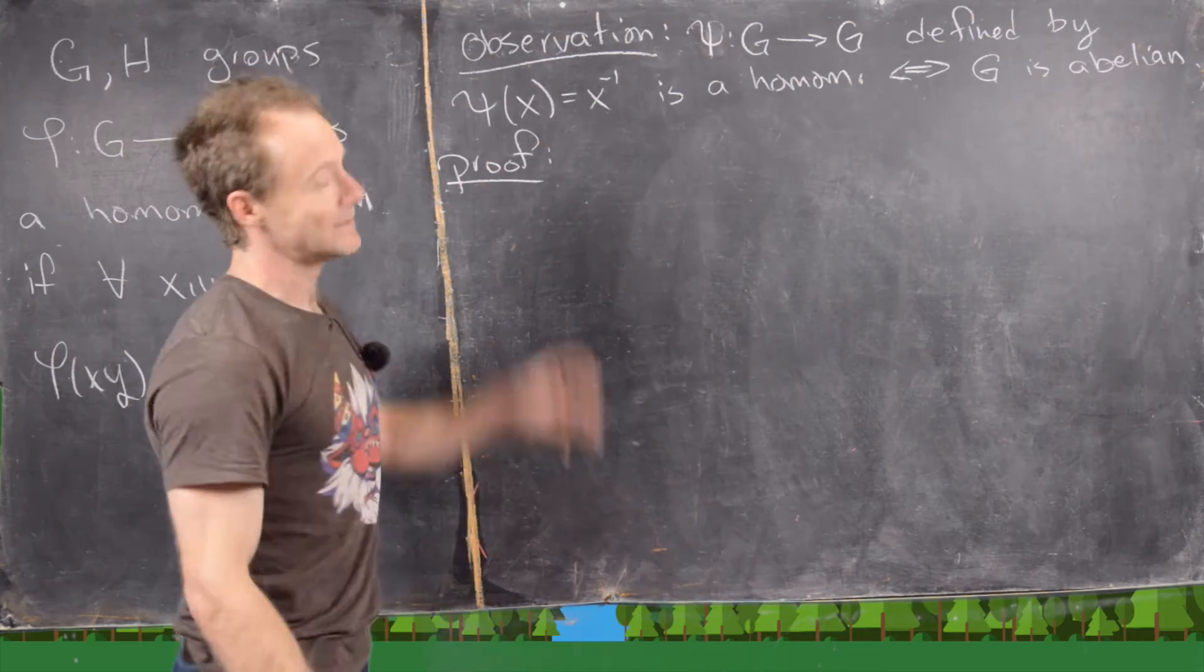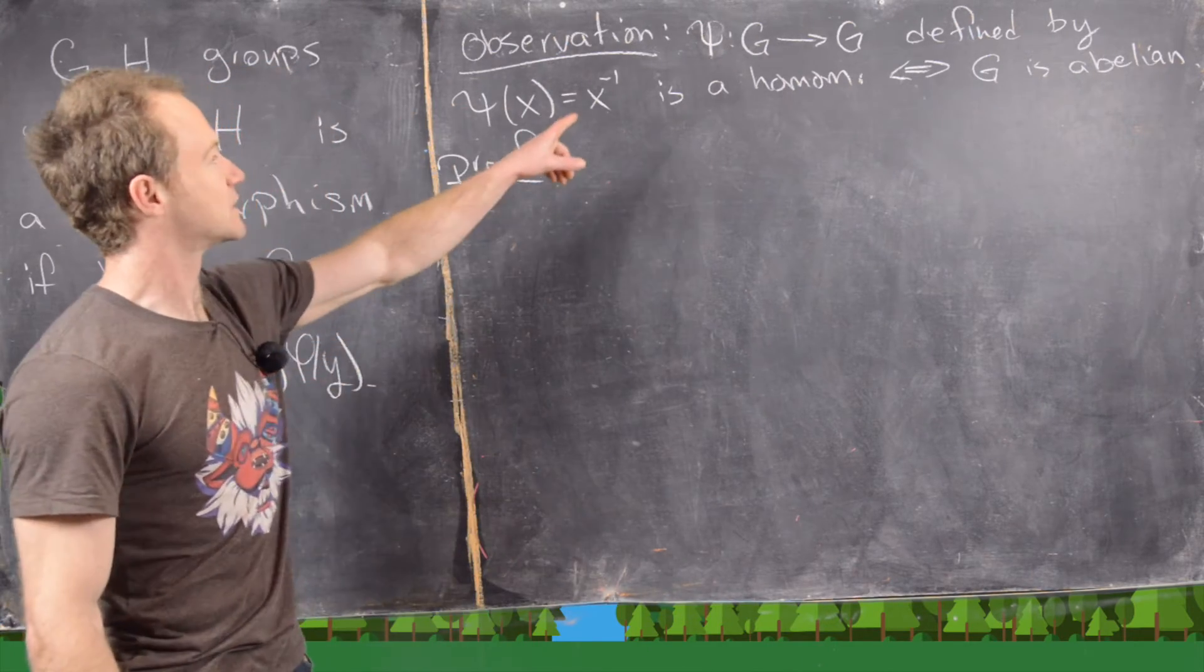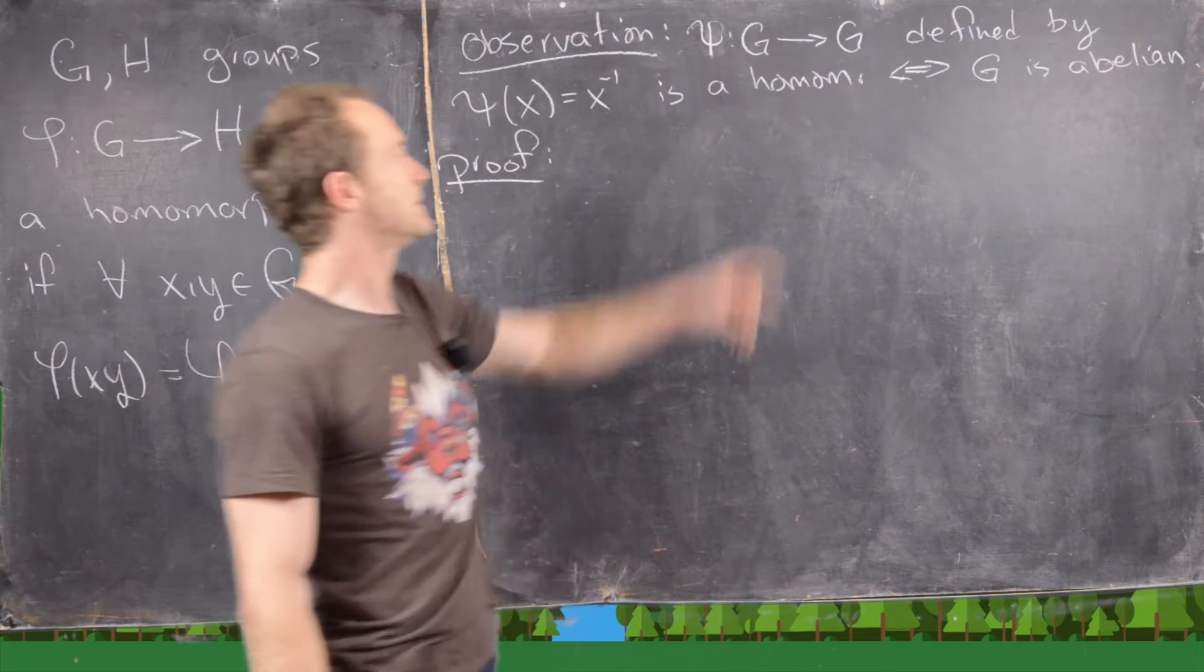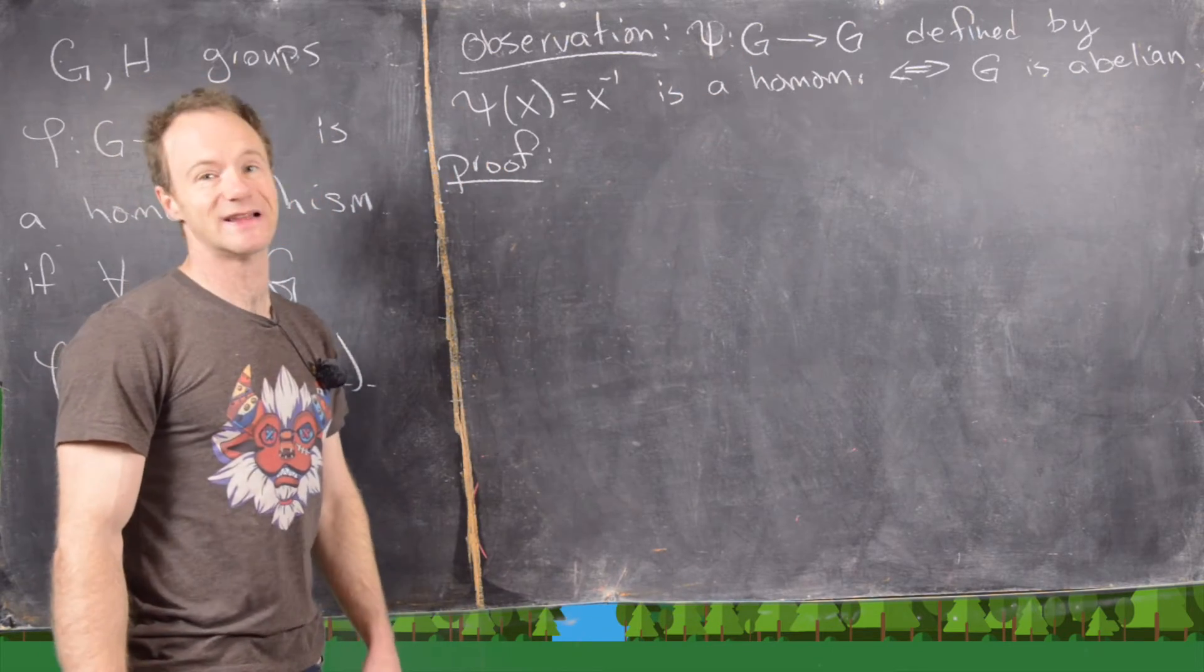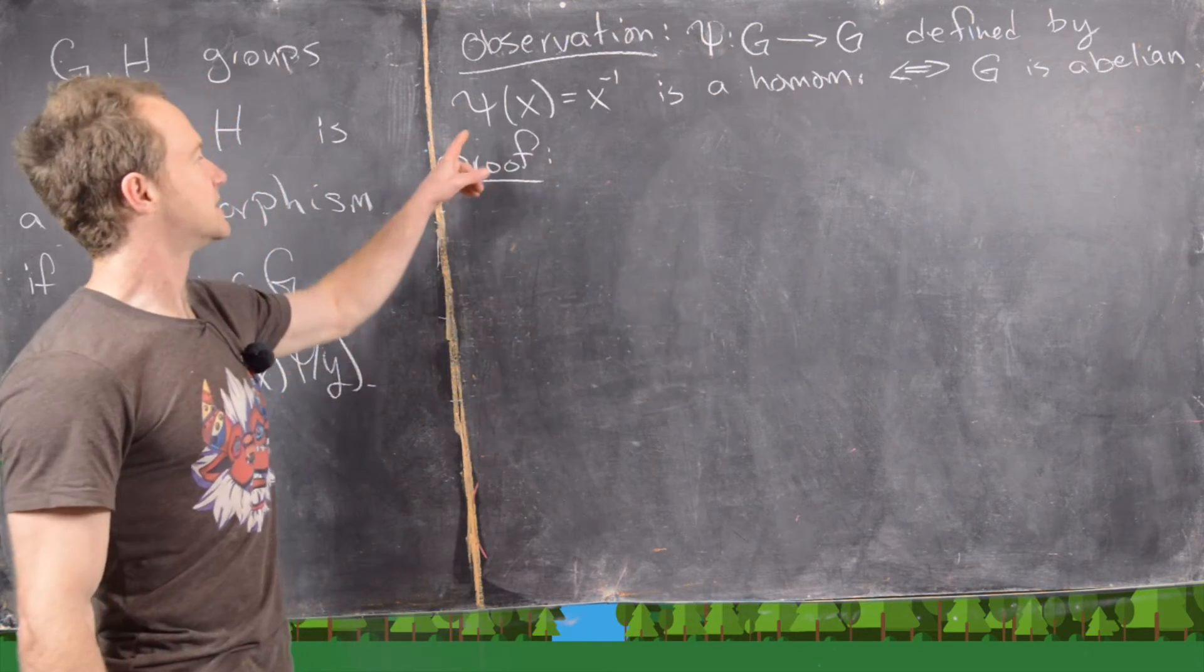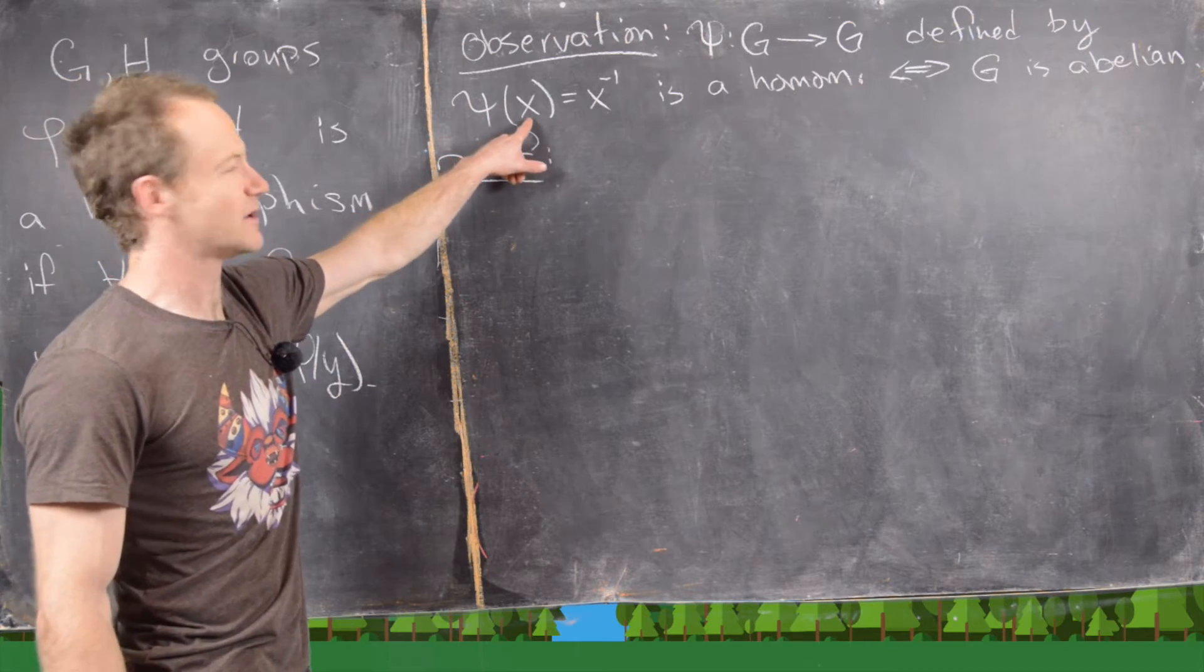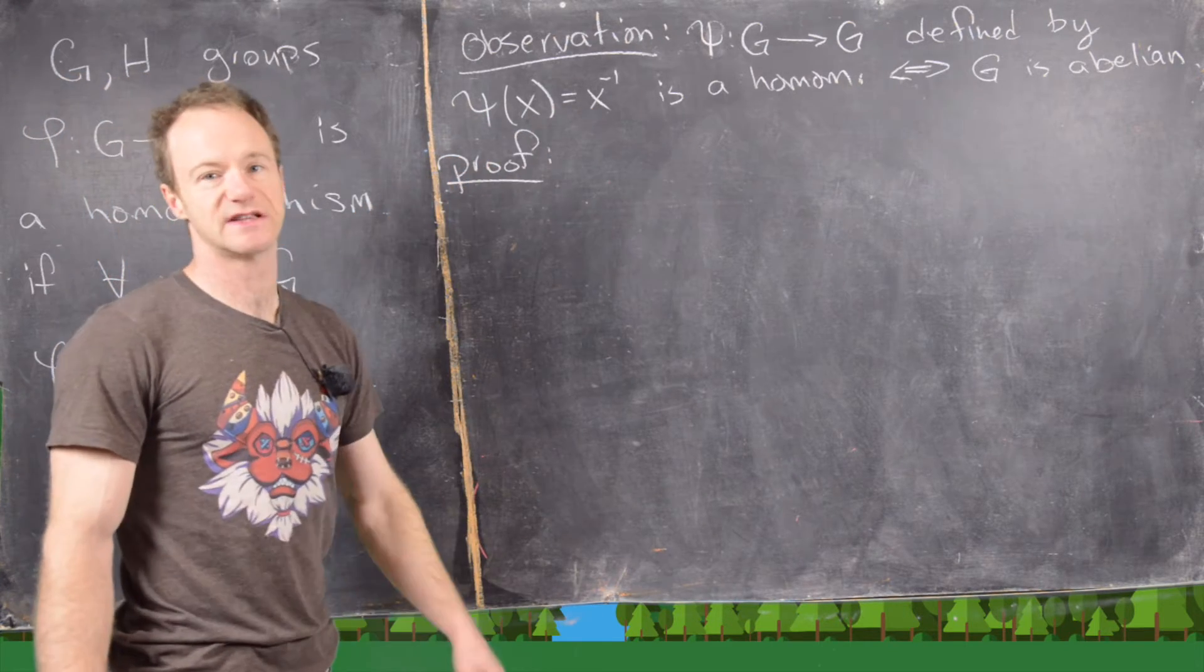So the observation that we're going to look at is the following. Let's define this function psi and it goes from G to itself and we'll define it in the following way. It will take an element from G and send it to its inverse.